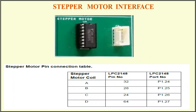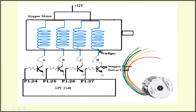Looking at the board, we can find a driver circuit to control the stepper motor. This is the actual circuit diagram. If you want to control a stepper motor, 5 volt or 3.3 volt is not sufficient — this requires a plus 12 volt supply. Here is your LPC 2148 microcontroller. There will be four windings, and to control each winding we need a separate driver circuit. In this case we are using a transistor.